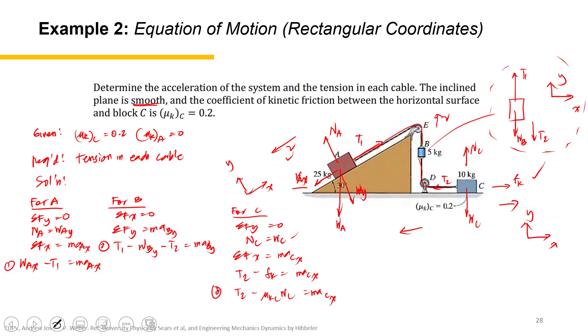So we have two tensions, T1 and T2. If I'm going to add all these equations, equation 1, 2, and 3, I'll just arrange them. W_Ax minus T1 equals M_A a_x. T1 minus W_By minus T2 equals M_A B_y. And the last is T2 minus mu_K_C W_C equals M_A C_x.